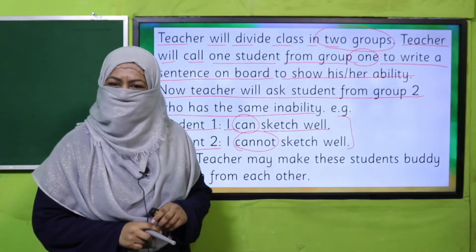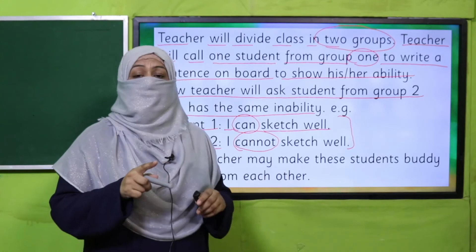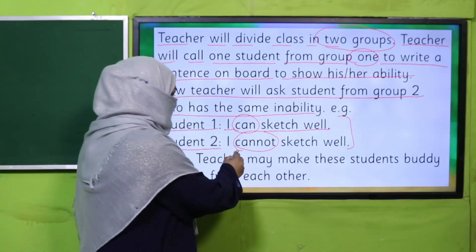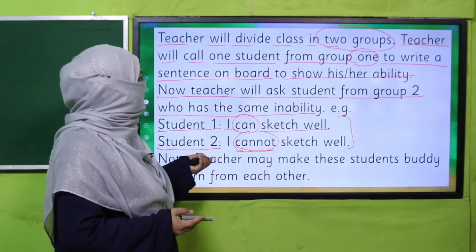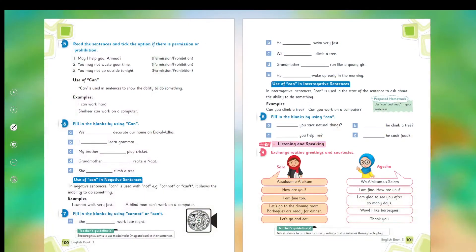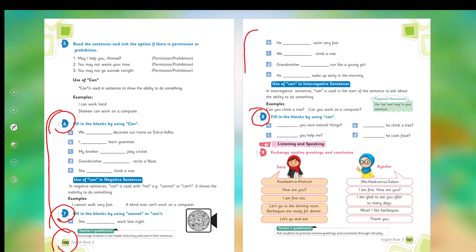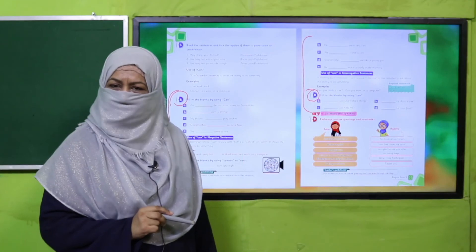Are you done? Good job! If right now I cannot sketch well, it doesn't mean I'm not smart — I can learn it. Now let's practice this concept from your book. Open your book on page 100. You will complete Question 6, then Question 7 and 8. Pause the video, complete Questions 6, 7, and 8, then come back.